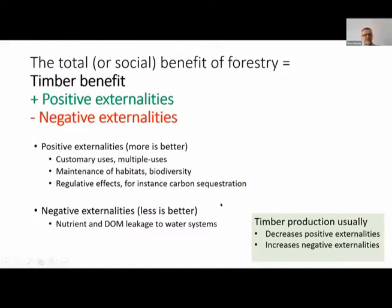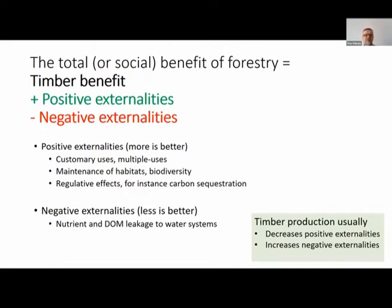There are also negative externalities, for which less is better — for example, nutrient leakage to the water system, or dead organic matter leakage from peatland forest to the water system. The reality in most cases is that when you are producing timber with current methods, you are usually decreasing the positive externalities of forestry and increasing the negative externalities. That is the situation in most cases.